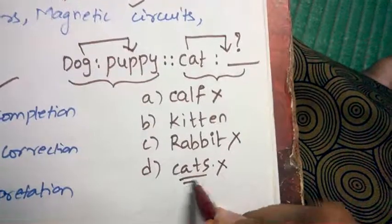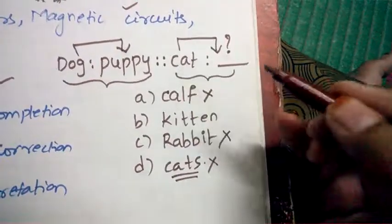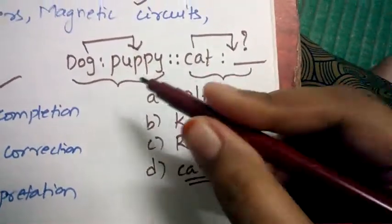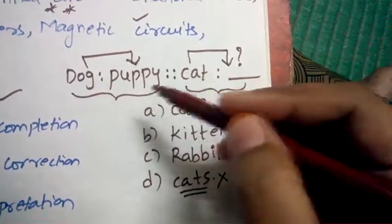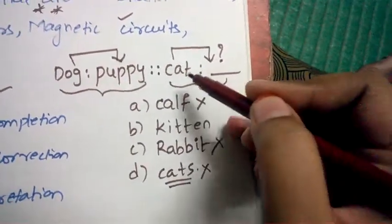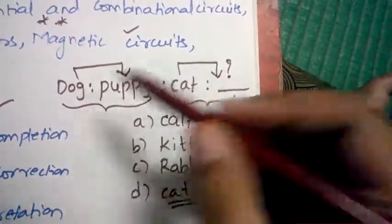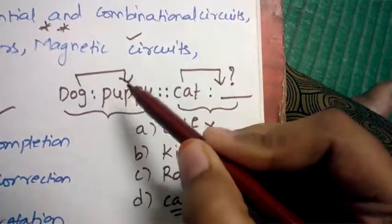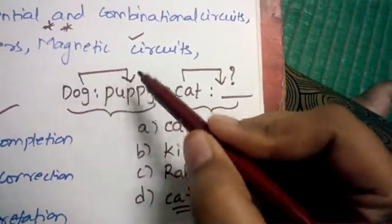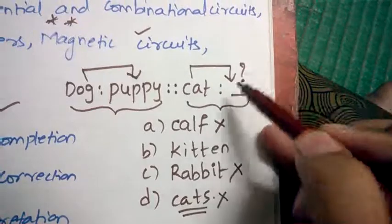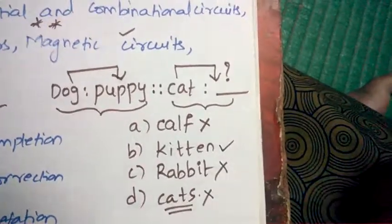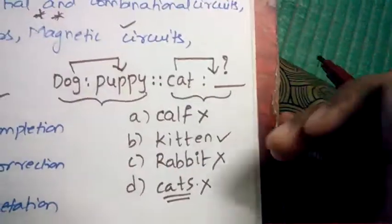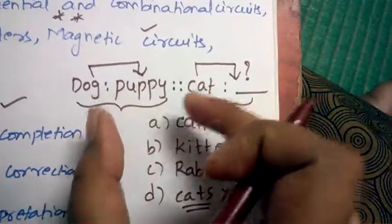They asked you the relationship to be followed between cat and the blank. Dog's child is called puppy, so the younger cat will be called kitten. So like this you need to first estimate the relationship between the things which they have given, and then you need to sort out the options and select the best answer.